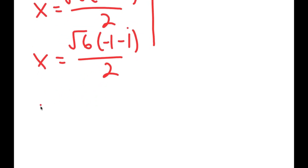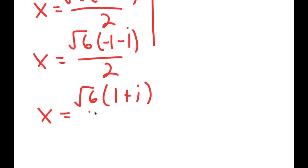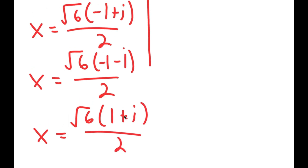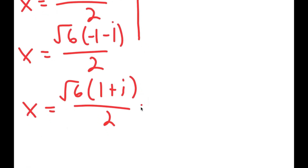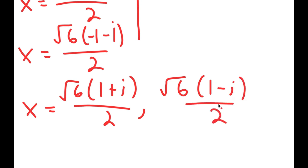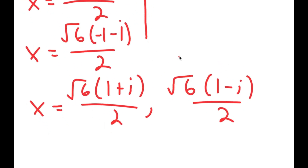Along with this, you should also get x equals the square root of 6 times i plus 1, over 2, and x equals the square root of 6 times 1 minus i, over 2. So these are your four solutions.